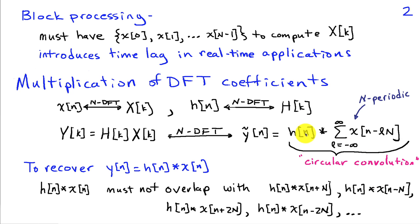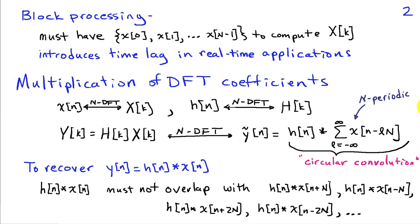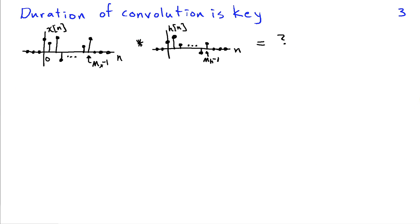We want the l=0 term not to overlap with any of the other terms. If that condition is satisfied, then we can isolate the l=0 term and identify it as y of n. This brings up questions about how long a convolution is, and when terms do or do not overlap. The duration of the convolution is the key.